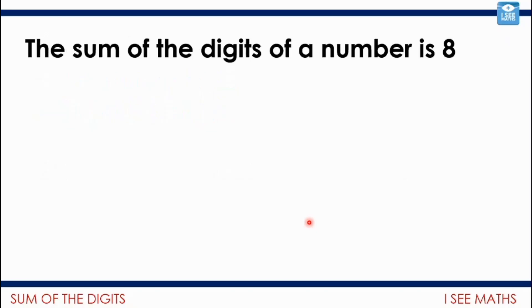So here we go. The sum of the digits for a number is 8. So see if you can write down some different numbers that it could be here. Some larger, some smaller. So pause the video and have a go.